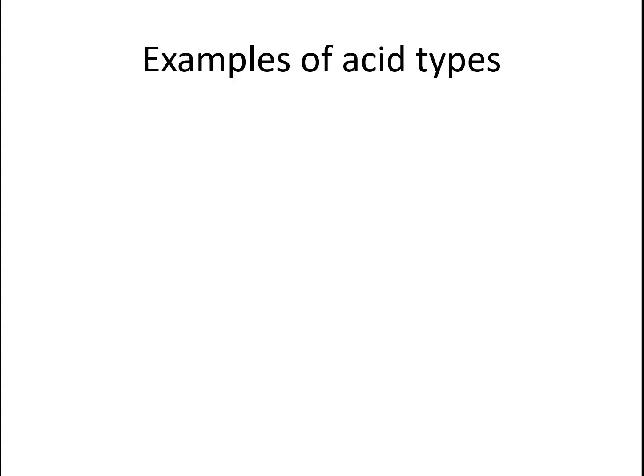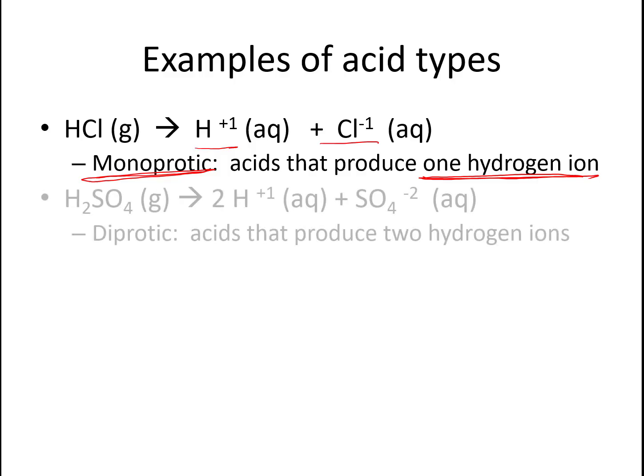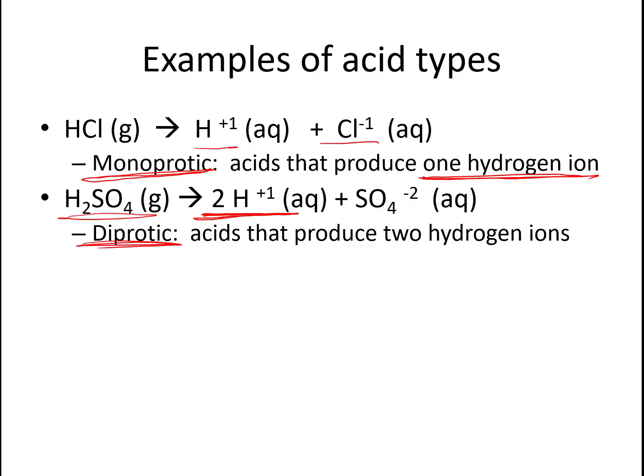There are different types of acids, and this is in the table on your notes page. Our first example is hydrochloric acid dissociating into one hydrogen ion and one chlorine ion. We call this monoprotic. Any acids that only produce one hydrogen ion are considered monoprotic. Any acids that release two hydrogen ions, like sulfuric acid here, are diprotic. Any acids that produce two hydrogen ions are diprotic. You can probably guess where we're going with this.